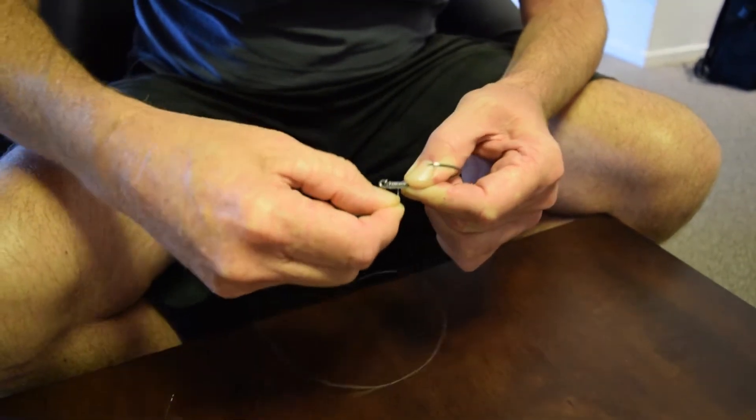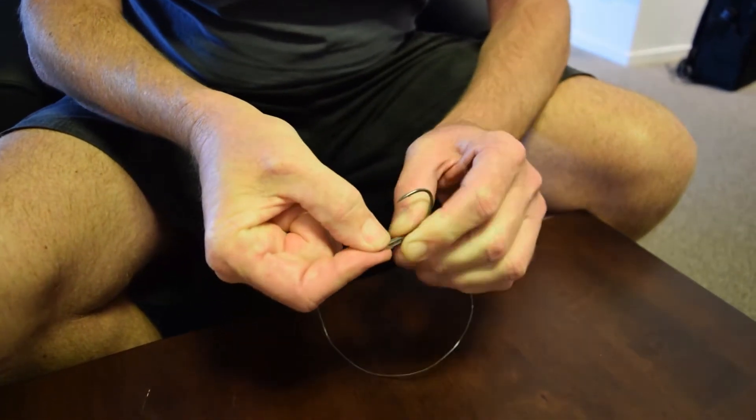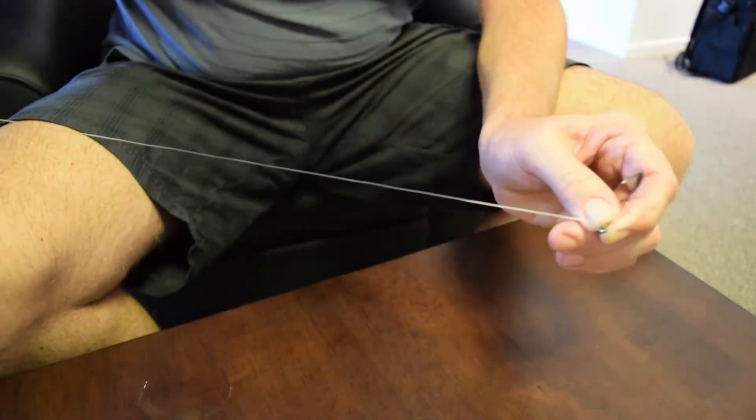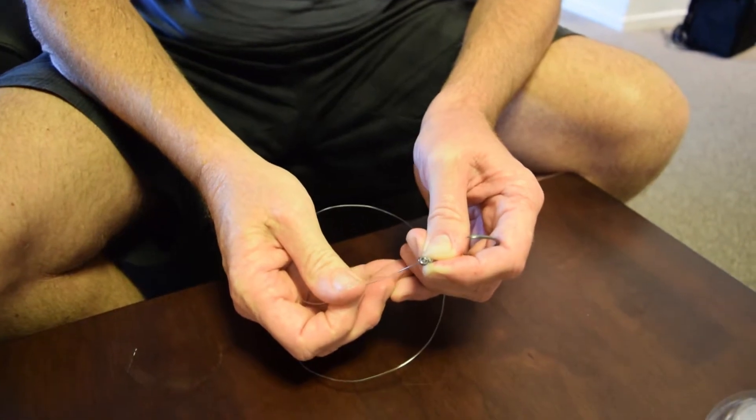12, and then one back up over the knot, being careful to put our tag end back up through the eye of the hook.